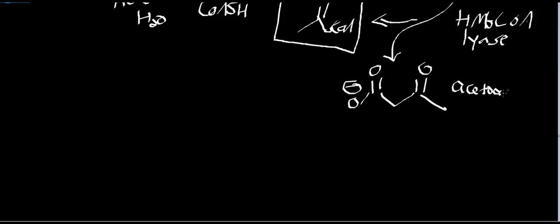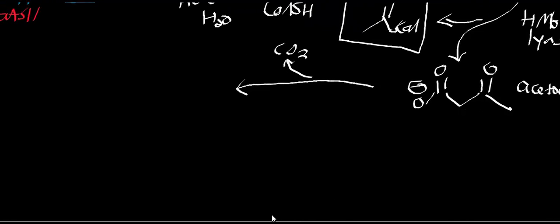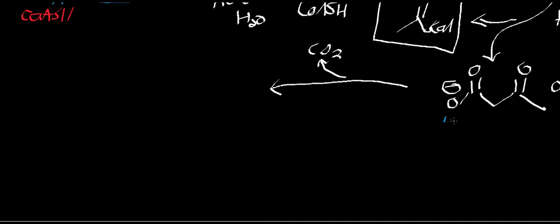The acetoacetate that we produce has one of two fates: either it can get decarboxylated, or it can be reduced. Let's look at the decarboxylation first. The enzyme is called acetoacetate decarboxylase. The mechanism: a lone pair kicks in, the bond comes out and abstracts a proton, and what you end up with is acetone. Acetone is actually what you smell on somebody's breath when they have not been metabolizing glucose — they end up producing a lot of ketone bodies.